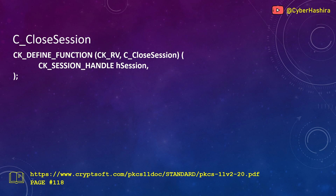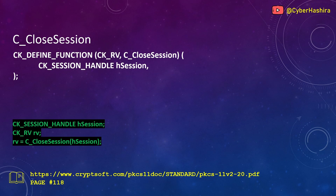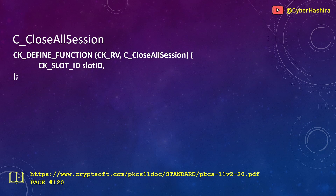C_CloseSession is used for closing an already open session. Once closed, an application can no longer pass cryptographic requests to the token. You can read about it on page 118. It takes one argument — the session handle number of the session to close — and returns CKRV, with CKR_OK indicating success.